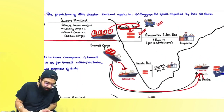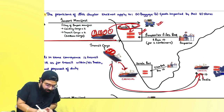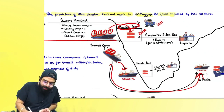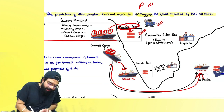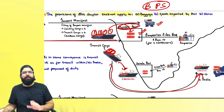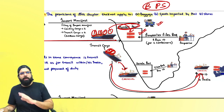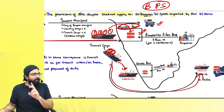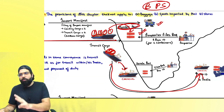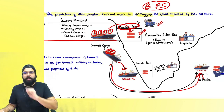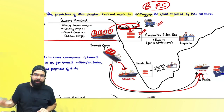Section 52 says the provisions of transit and transshipment shall not apply to baggage, post, or stores — BPS. Special provisions already exist for these. Section 53 talks about goods in transit: further transportation of goods in the same conveyance from outside India is transit.